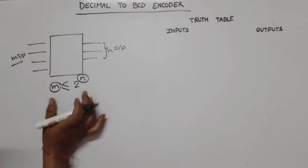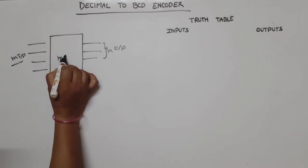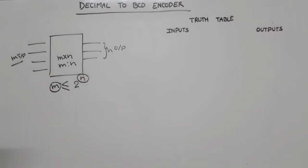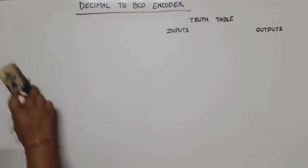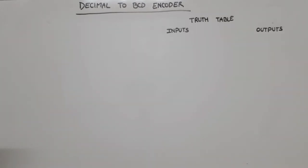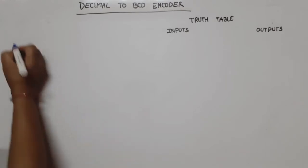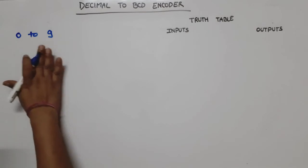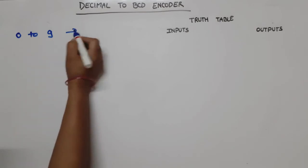n is the output lines, m is the input lines, and this is the relationship between input and output. This encoder is called m cross n encoder. For this question, when we discuss decimal to BCD encoder - decimal numbers are zero to nine.